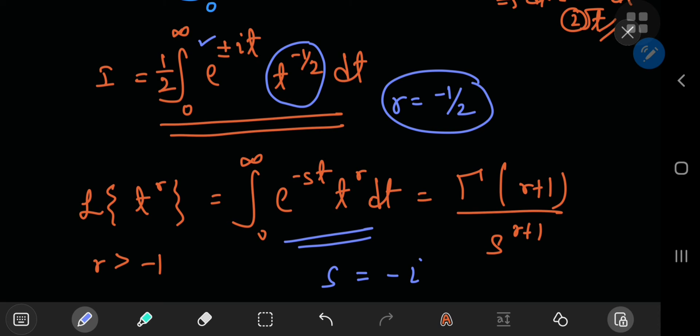And as far as the parameter s is concerned, the parameter s should be equal to negative i for sorting out the positive integral, because two negatives make a positive. And for the negative case, you're going to need a positive i.